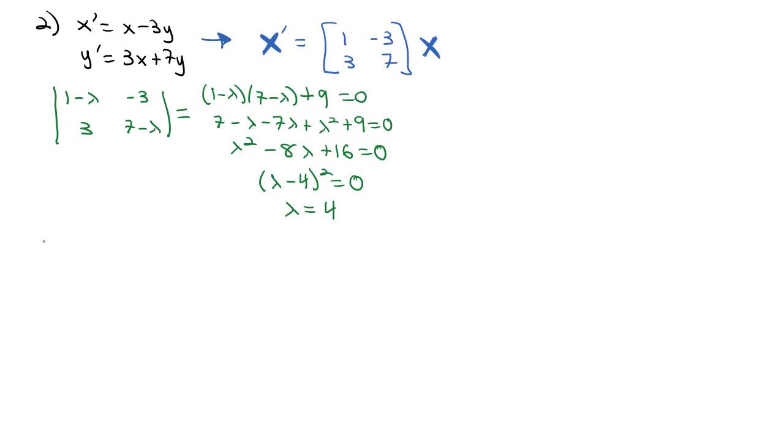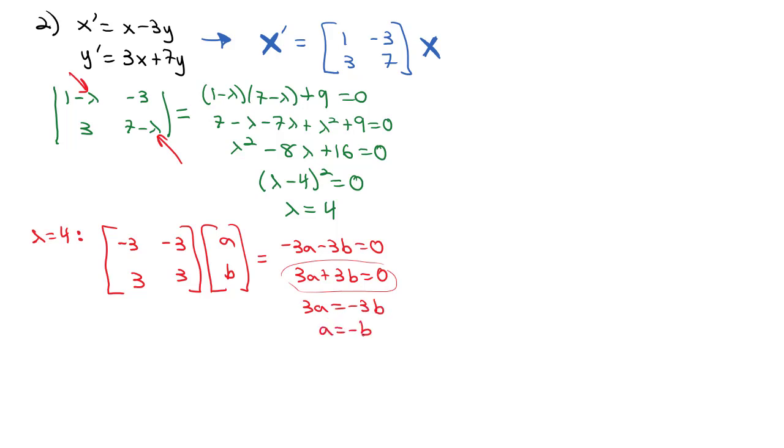First, we find the eigenvector. If lambda equals 4, we end up with 1 minus 4 is negative 3, negative 3, 3, and 7 minus 4 is 3, times our ab. That gives us negative 3a minus 3b equals 0, or 3a plus 3b equals 0. I'll grab the positive one, 3a equals negative 3b, divide by 3, and a equals negative b. Let's let b equal 1, that gives me a is negative 1, b is 1, and we've got our eigenvector.